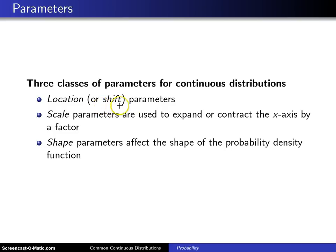The first is called a location, or a shift parameter. So for example, when we get to the normal distribution, you will see that the shorthand for the normal looks like this.